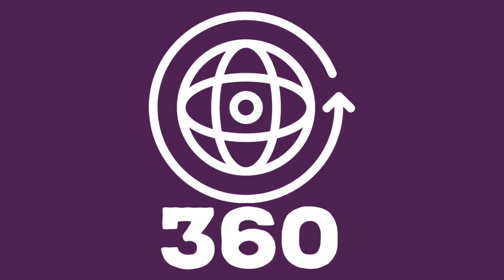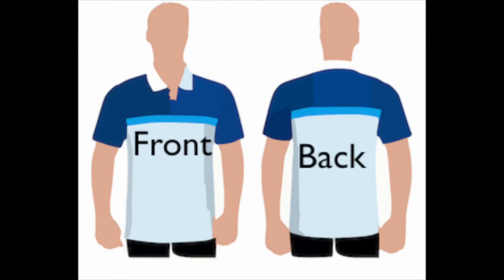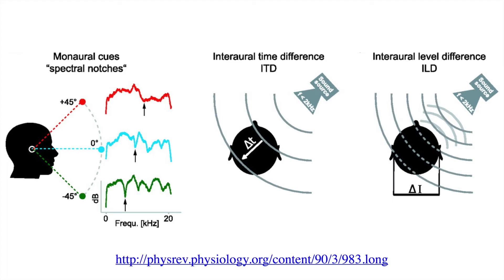This works because with just two ears on either side of our heads, we can perceive sounds in 360 degrees. In addition to left and right, we know when a sound is above or below us, in front or behind us. When we hear a sound, based on the sound source's relative location to us, it reaches each ear at slightly different times, at slightly different amplitudes, and with slightly different frequency spectra.